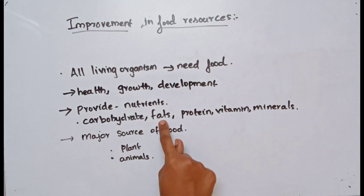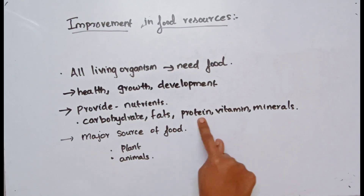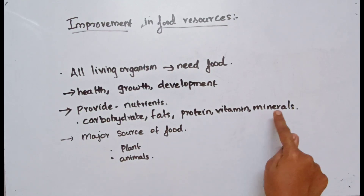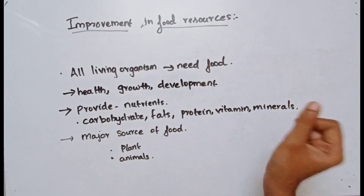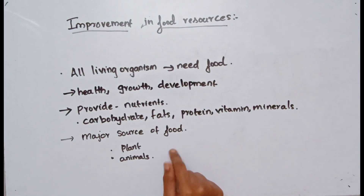The nutrients found in food are carbohydrates, fats, proteins, vitamins, and minerals. The two major sources of food are plants and animals.